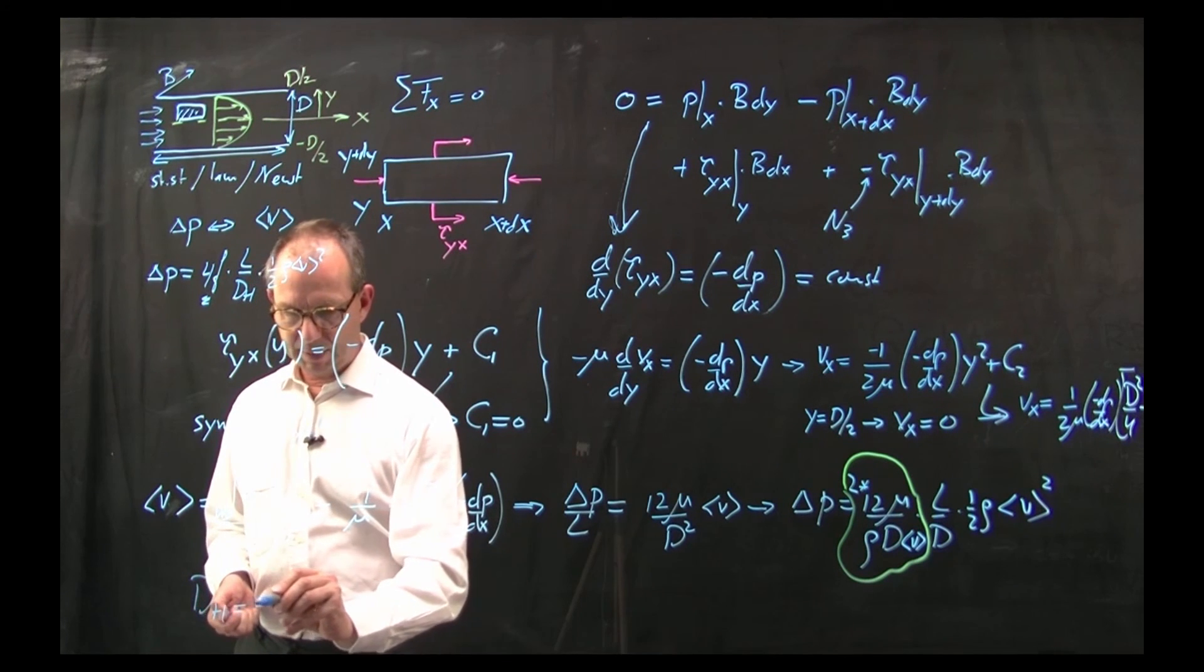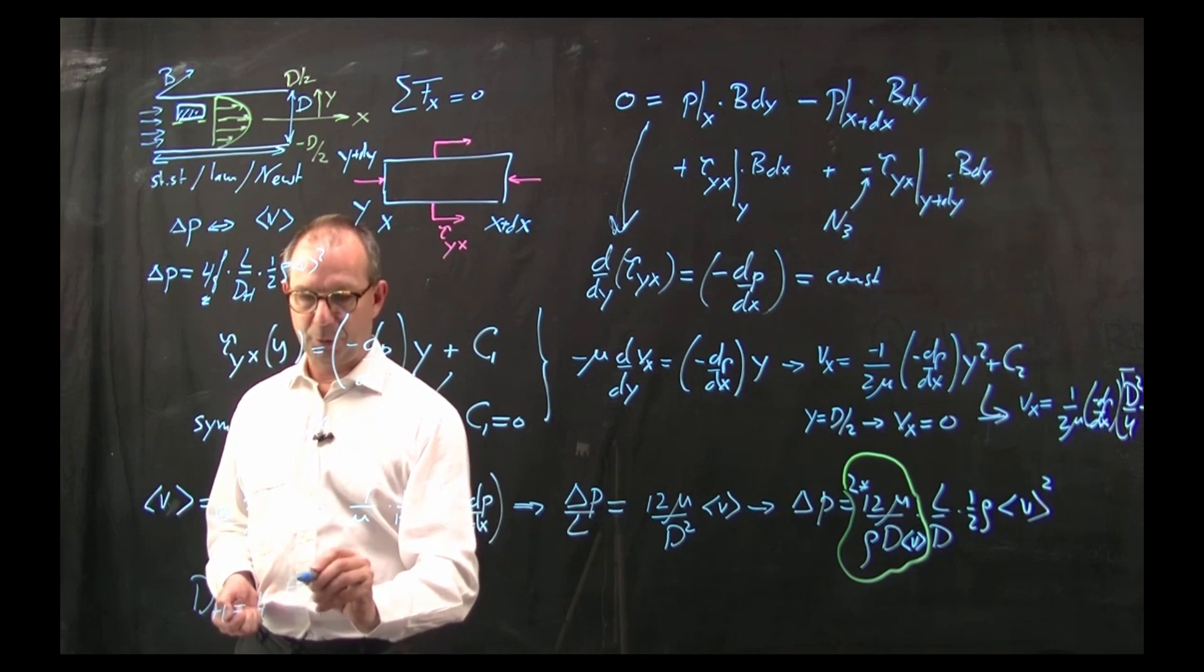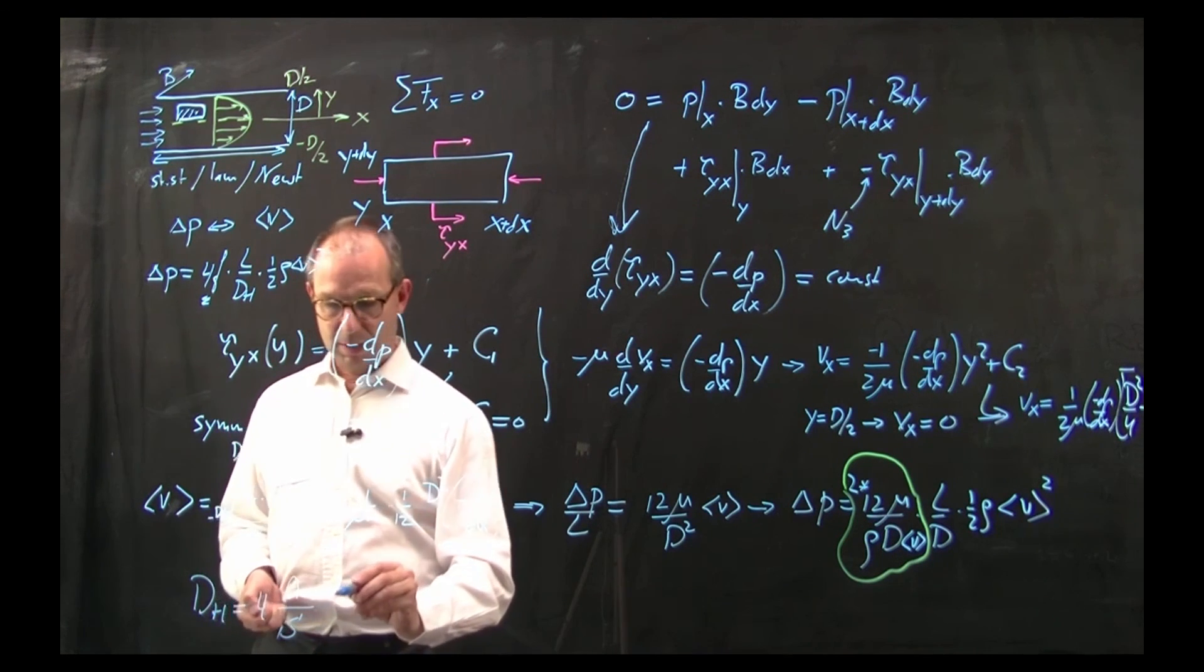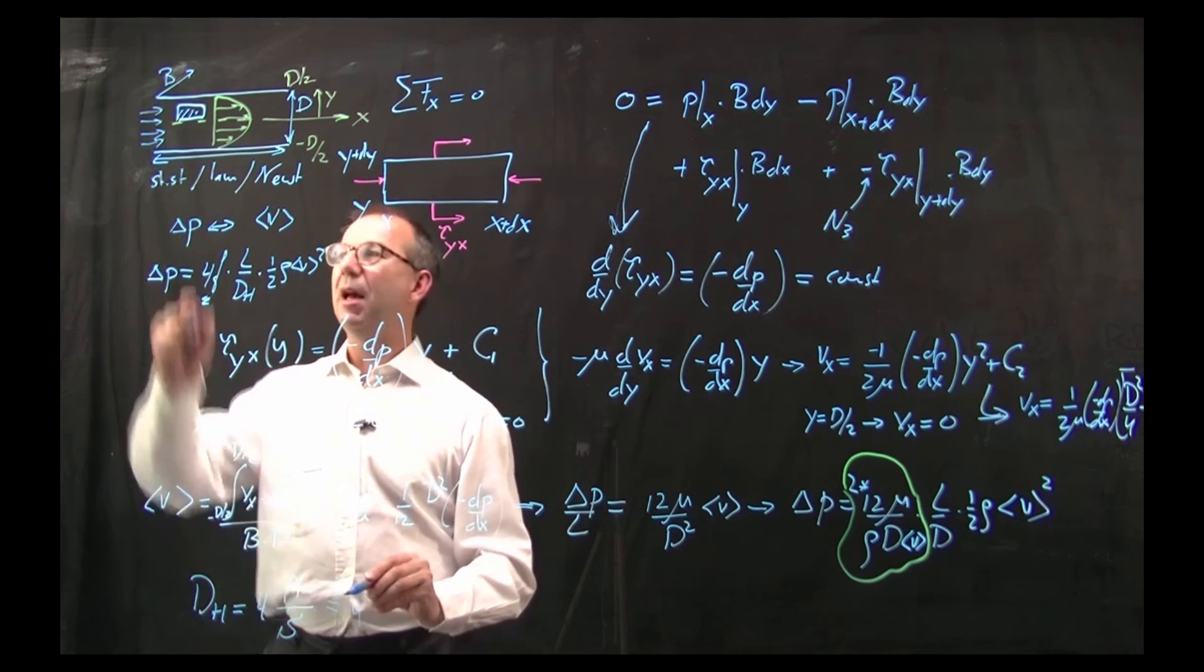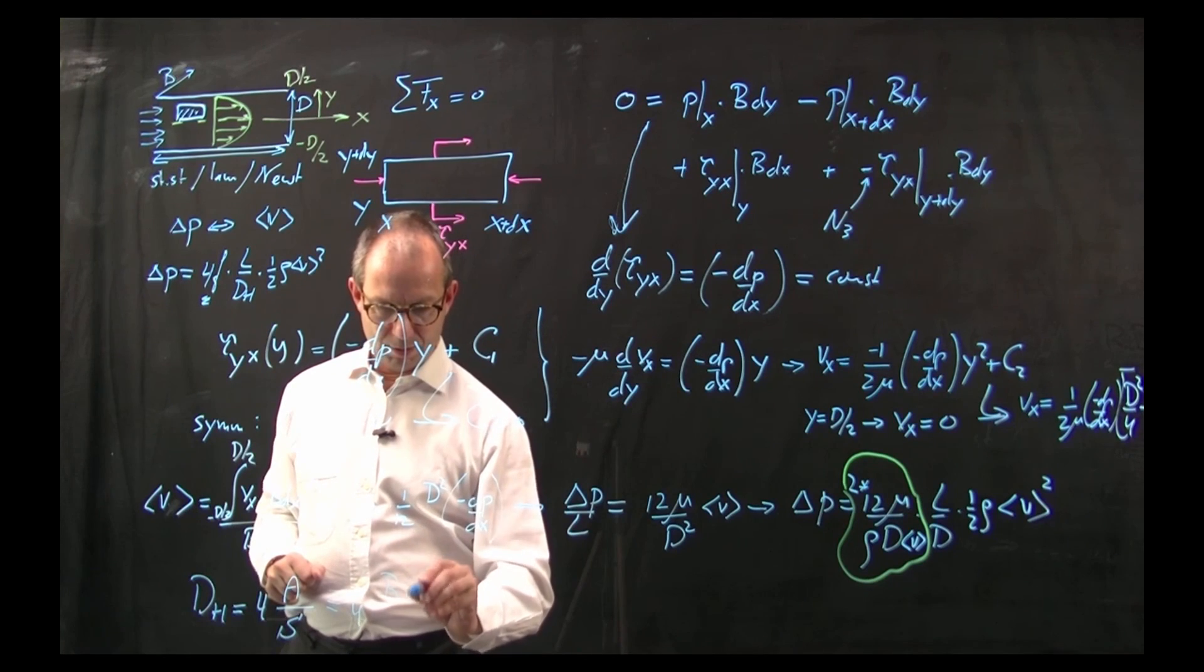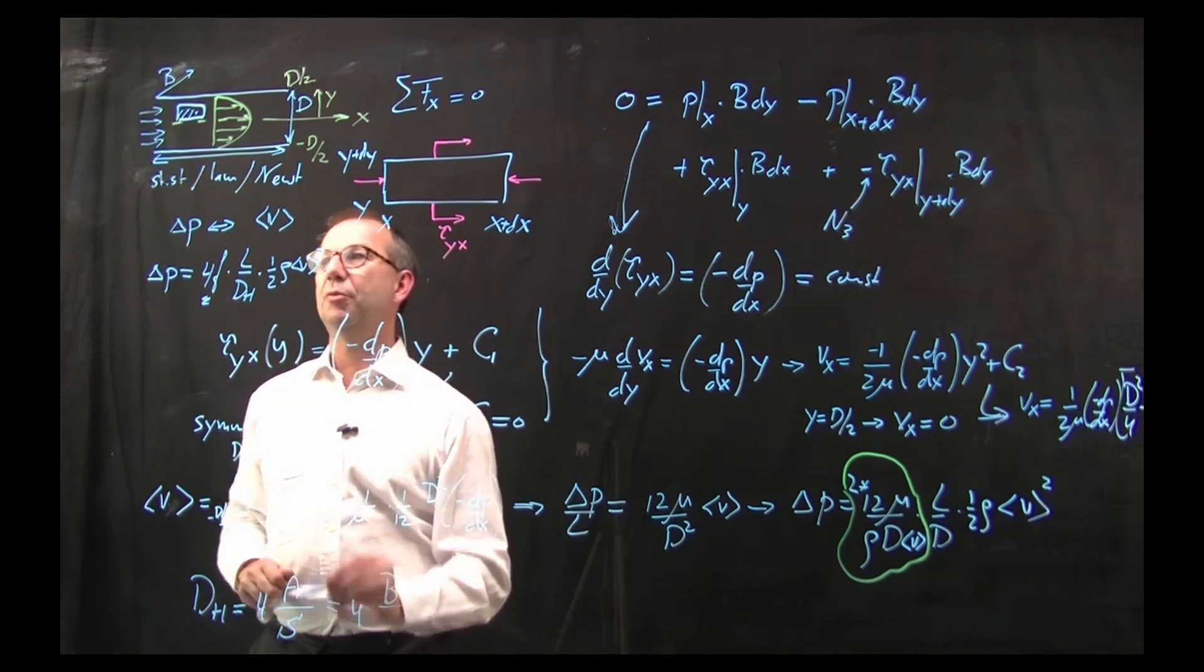dh is by definition 4 times the area through which the flow comes divided by the wetted perimeter. That is 4 times the area, that is b times d, divided by the wetted perimeter.